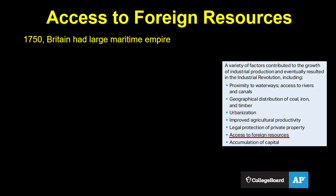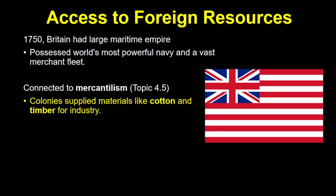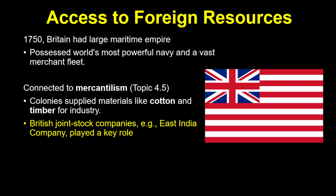That leads us to access to foreign resources. By 1750, the British had a well-established maritime empire, with the most powerful navy in the world, as well as a massive fleet of merchant ships. We can connect this to mercantilism from topic 4.5. Britain's colonies provided raw materials, such as cotton and timber, required for industrial production. In addition, British joint stock companies like the East India Company meant it also had access to foreign goods from around the world, such as India and Egypt, which both provided cotton.